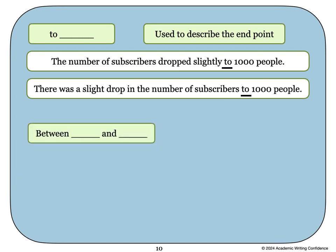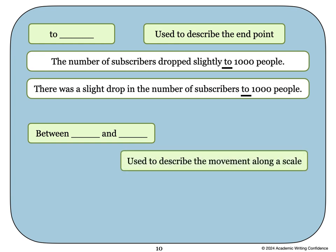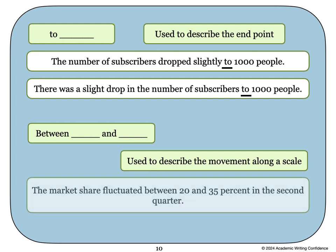Another common phrase is to use the words between something and something. We use this to describe the movement along a scale. For example, the market share fluctuated between 20% and 35% in the second quarter.